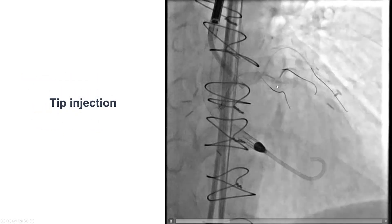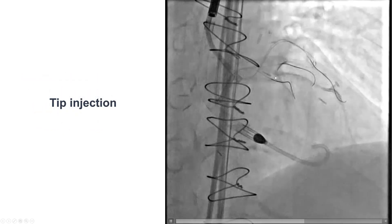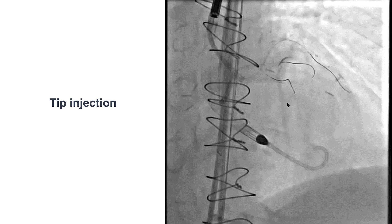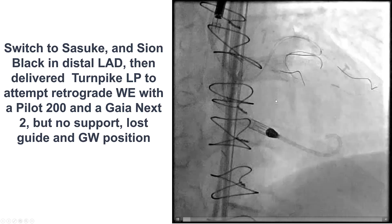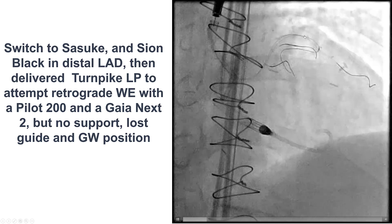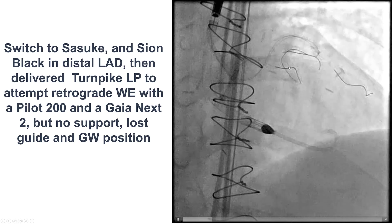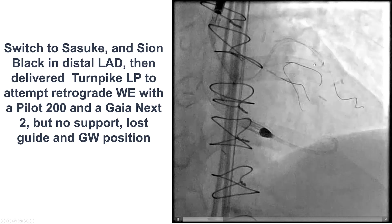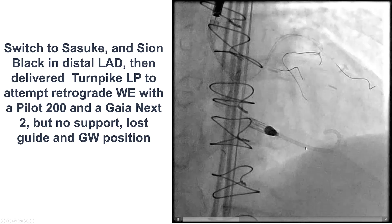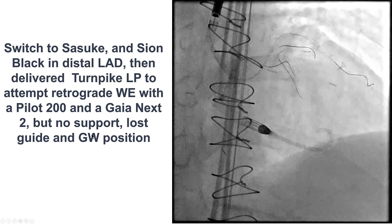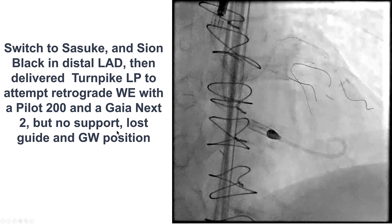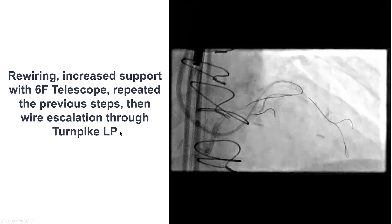We advanced the Turnpike LP. This is a distal tip injection demonstrating the distal cap that was blunt. We had some difficulty with support. We used the Sasuke dual-lumen microcatheter to advance a wire down in the LAD, but the support was not good, and eventually we lost the wire and guide position.